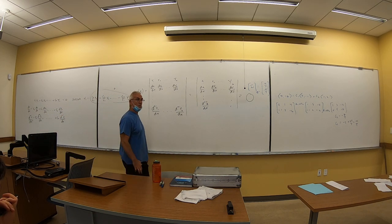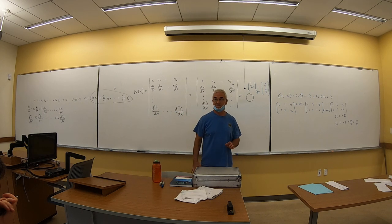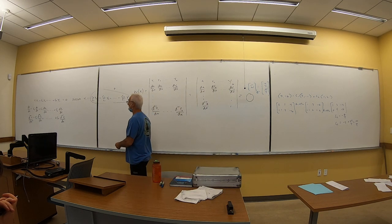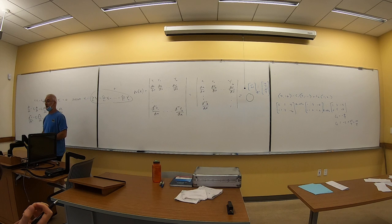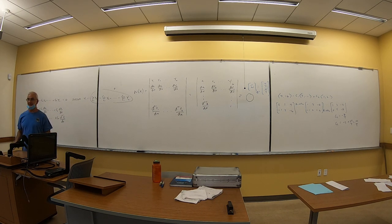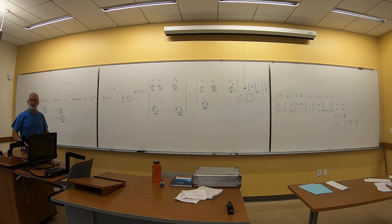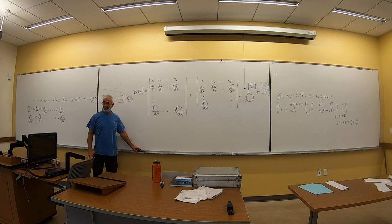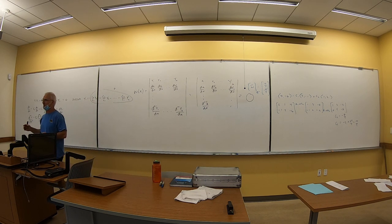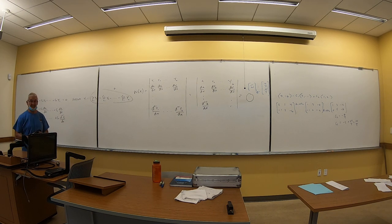So the rule: if the Wronskian is zero, then the functions are linearly dependent. If the Wronskian is non-zero, then they are linearly independent. This is extremely useful in differential equations, where you're generally not dealing with more than two or three functions at once.